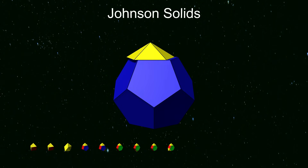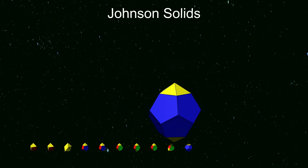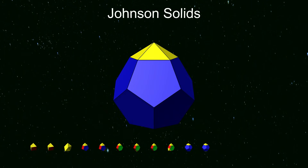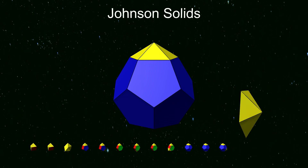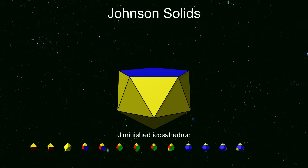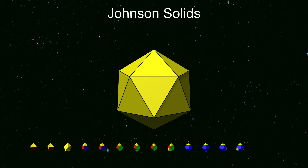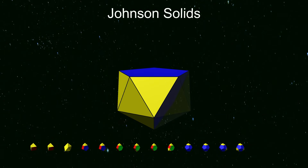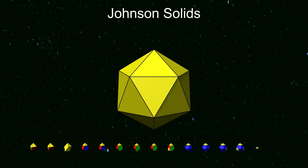The dodecahedron can be augmented with a pentagonal pyramid on one side, on two opposite sides, on two non-opposite sides, or on three sides. The icosahedron can be diminished, which means having a pentagonal pyramidal cap removed. The diminished icosahedron is the same as the gyro-elongated pentagonal pyramid, and the para-bi-diminished icosahedron is just a pentagonal antiprism. But the meta-bi-diminished icosahedron and the tri-diminished icosahedron are new shapes.